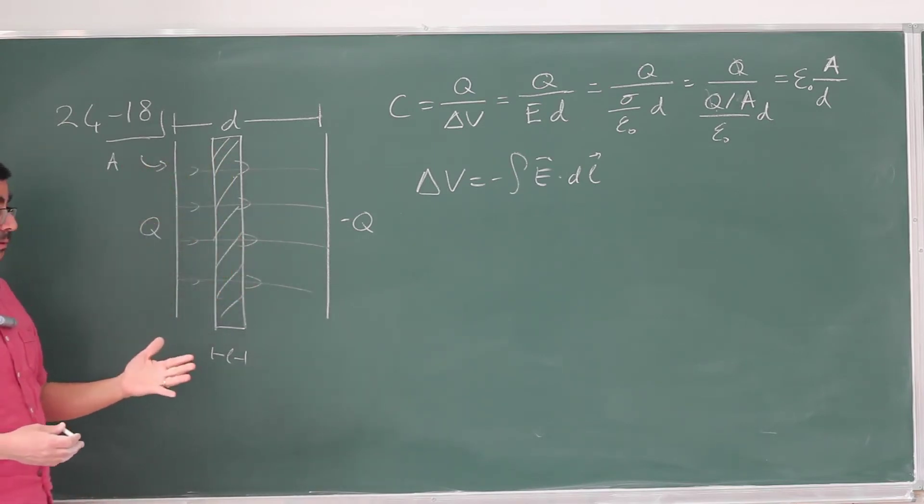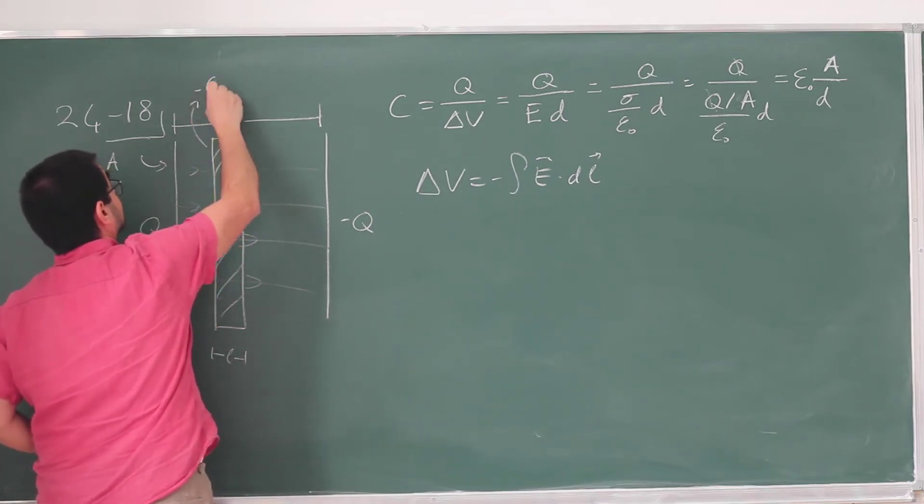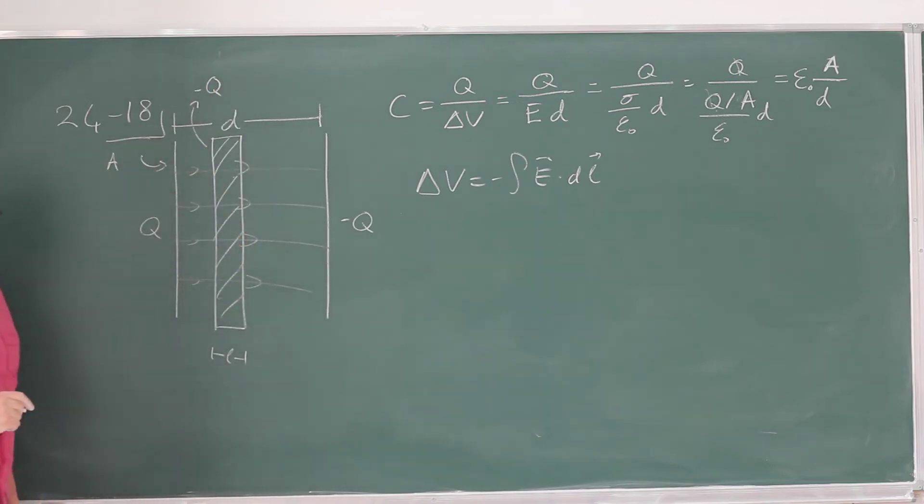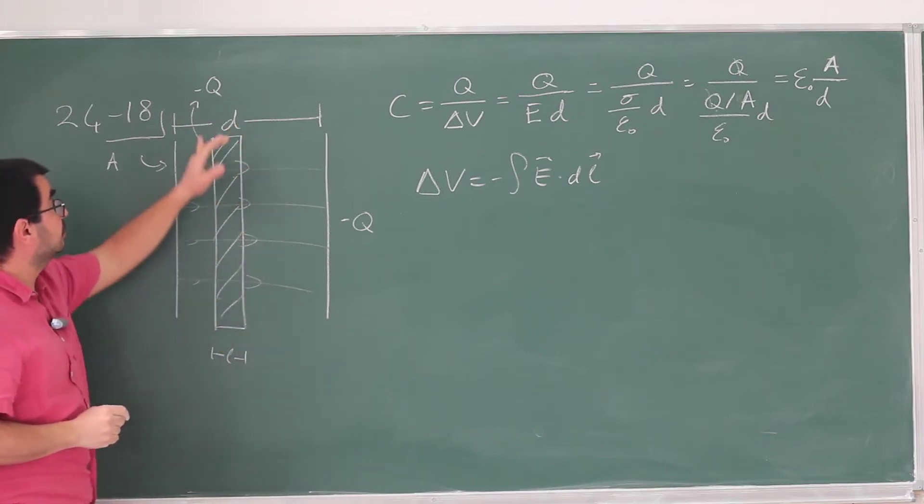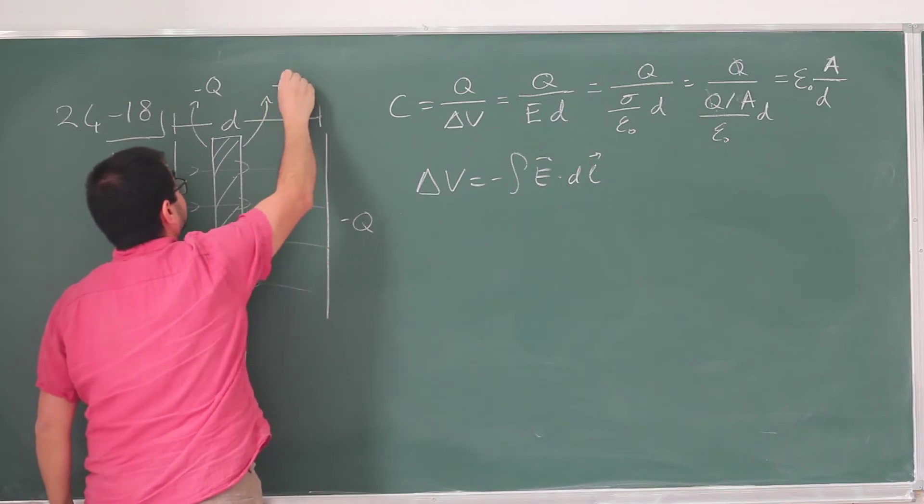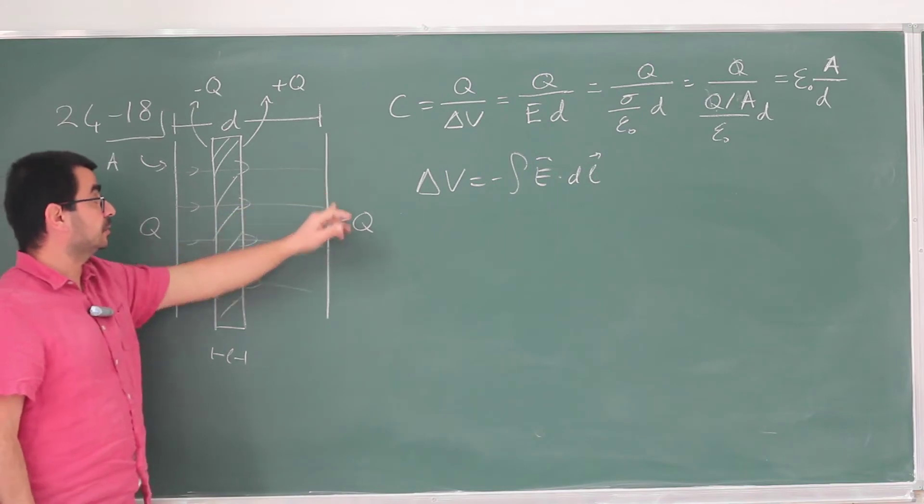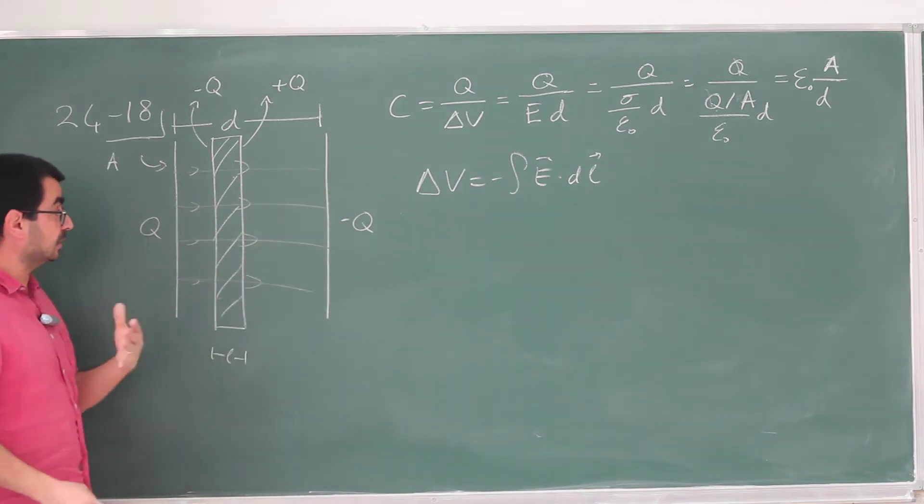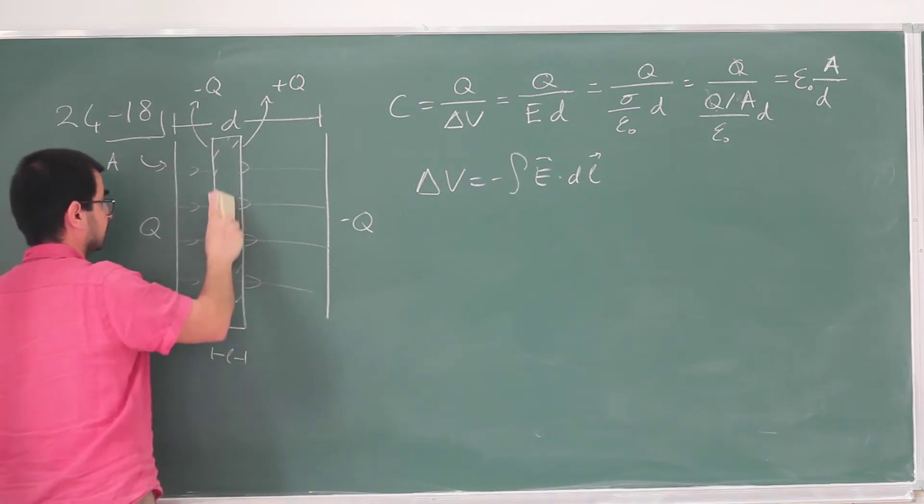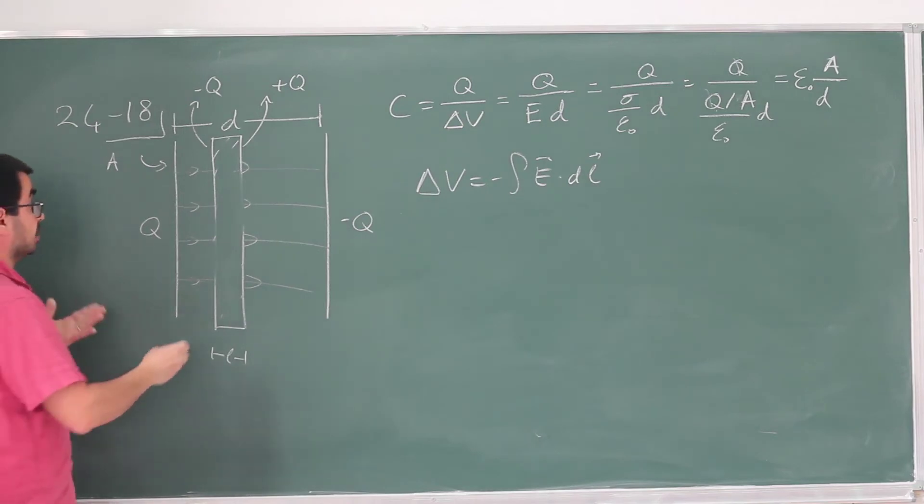But now they are going to come and hit this conducting slab. And they must terminate there because there is no electric field inside the conductor. Now, the only way they can terminate there is if I actually introduce some negative Q on this side of the slab. Then, on the other side, if I'm inducing a minus Q here, I must be inducing a positive Q. And from that positive Q, some new electric field lines are going to emerge. And they're going to terminate on these negative Q lines. So what is going to happen is that my electric field is going to be interrupted throughout this conductor. Otherwise, it's going to remain unchanged.